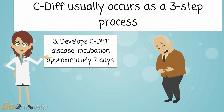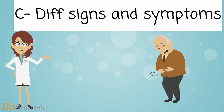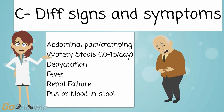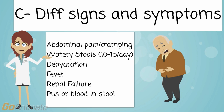In the third step, the patient will usually develop C-diff disease. The usual incubation time is approximately seven days. The signs and symptoms of C-diff include abdominal pain and cramping, watery stools of 10 to 15 per day, and dehydration.